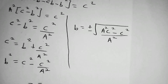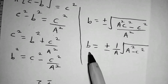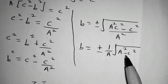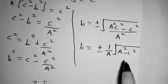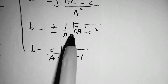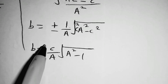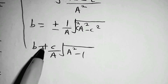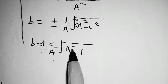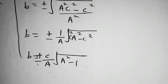Taking the square root, we can factor C squared out and take the square root of C squared, which is C. So our final answer will be B is equal to plus or minus C over A, multiplied by the square root of A squared minus 1.